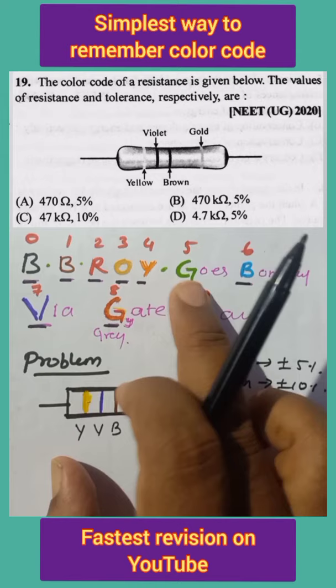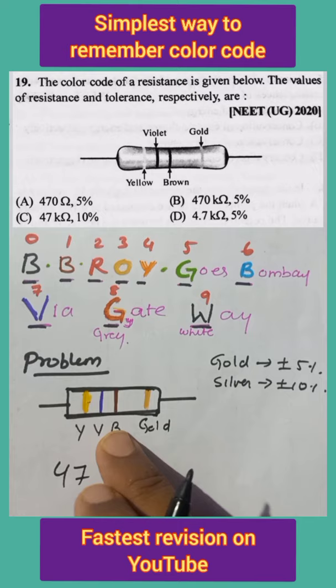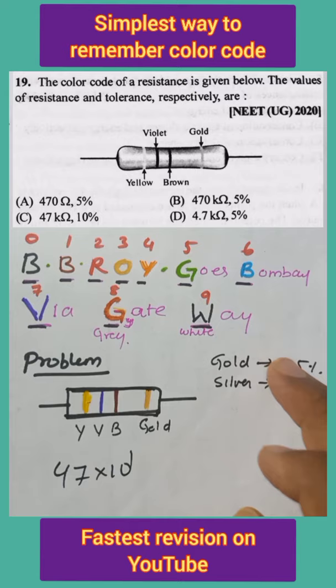In this example, the color bands are Yellow, Violet, Brown. Yellow means 4, Violet means 7. The first two colors represent the digits, and the third color represents the power (multiplier). Brown means a power of 1, so the multiplier is 10^1, giving us 47 × 10 = 470 ohms.